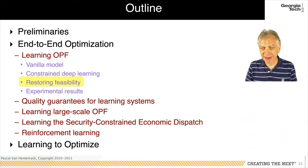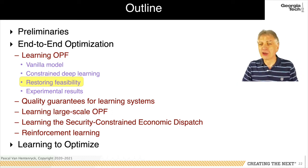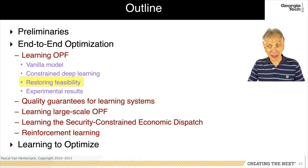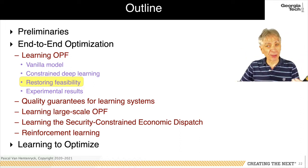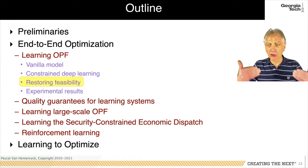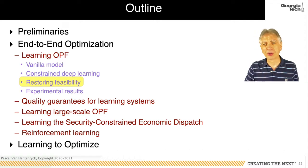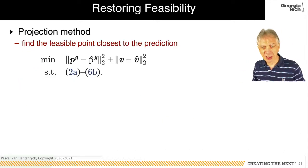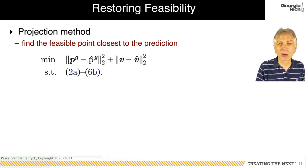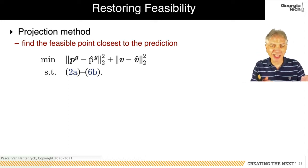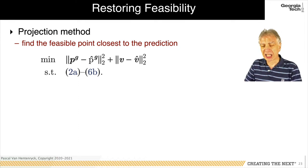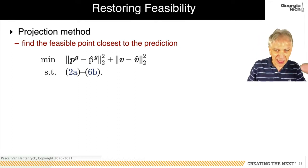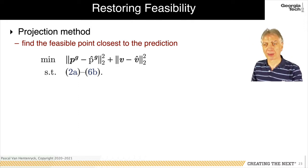The constrained deep learning approach minimizes constraint violations but does not guarantee a feasible solution at prediction time. Two techniques restore feasibility. The first is a projection method: find generator setpoints that are as close as possible to the prediction while satisfying all physical and engineering constraints. The second is a traditional power flow, which fixes certain variables at each bus to find voltages and powers satisfying the physical constraints, without requiring full optimization.